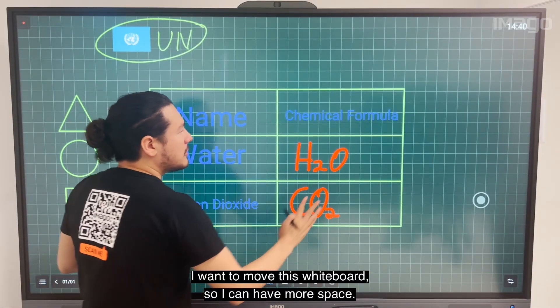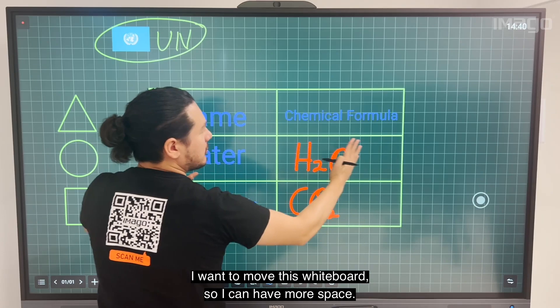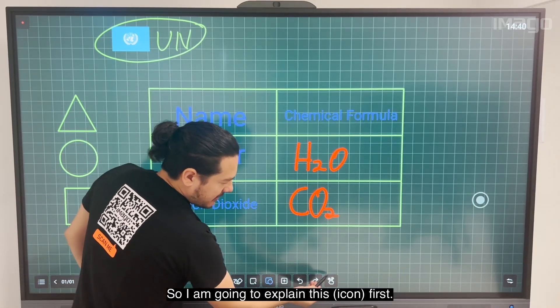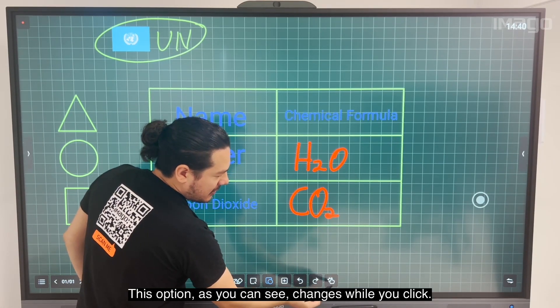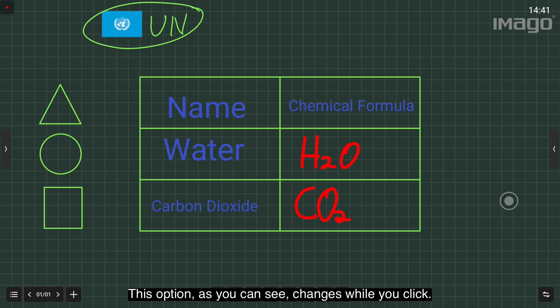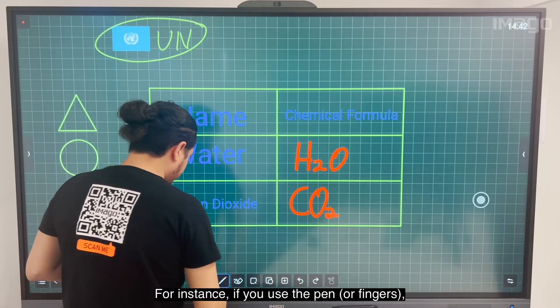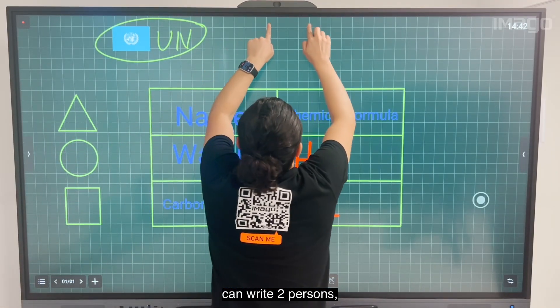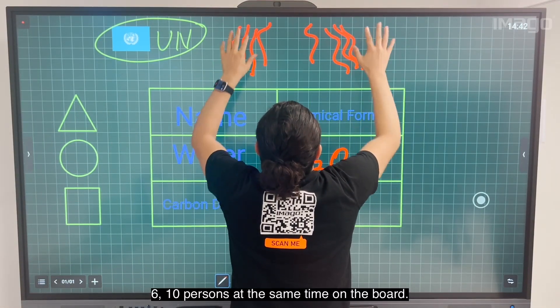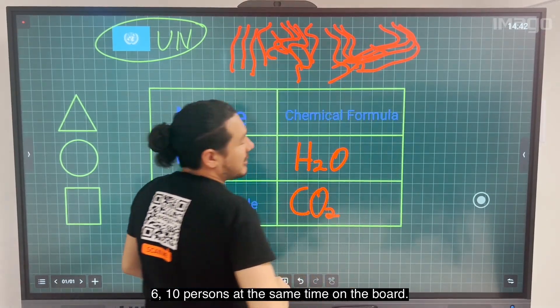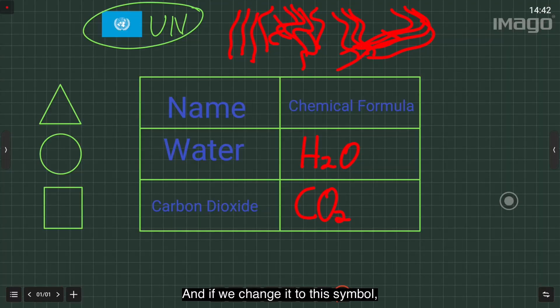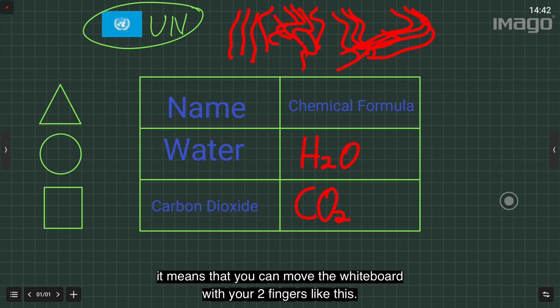Before going to the next point, I want to move this whiteboard so I can have more space. I'm going to explain this option first. As you can see, it changes when you click. The meaning of this symbol is that more than one person can write at the same time - two persons, six, ten persons simultaneously on the board. If we change it to this symbol, it means you can move the whiteboard with your two fingers like this.